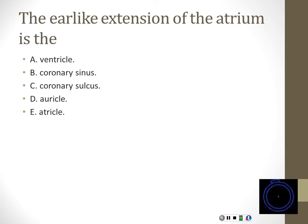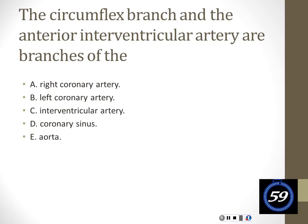The best answer is D — auricle. The ear-like extensions of the atria are the auricles. You should see that on the sheep heart in lab because they have pretty pronounced auricles too.